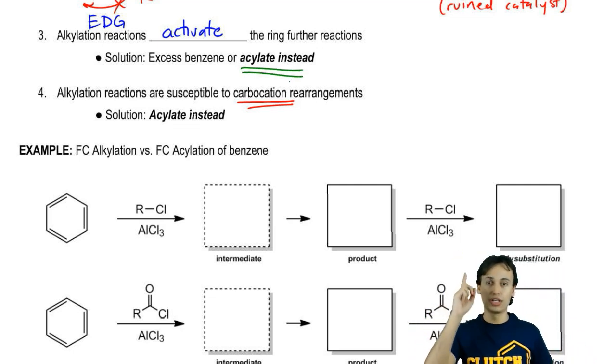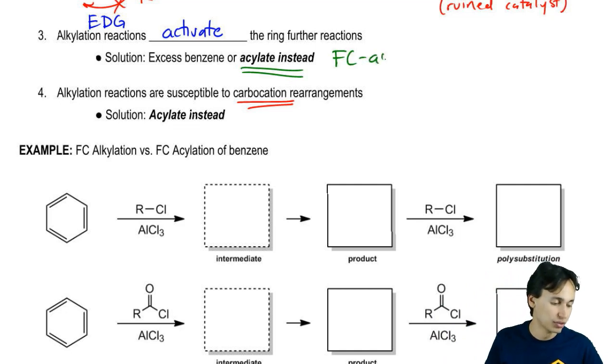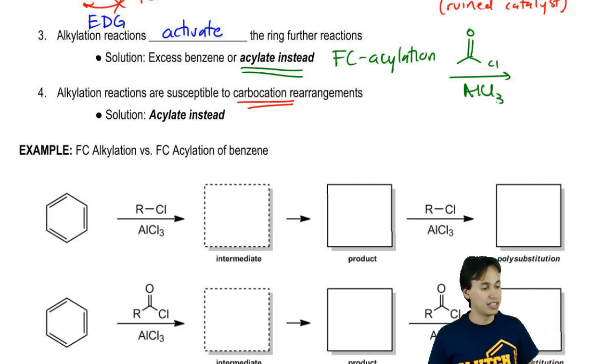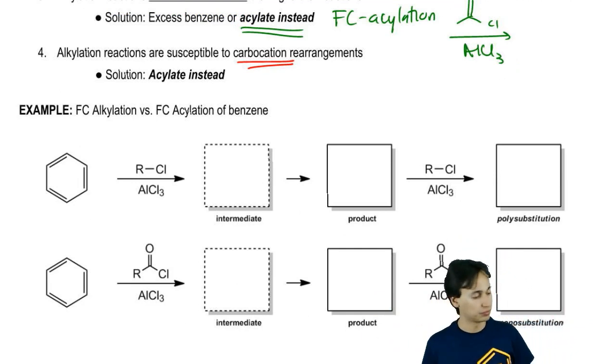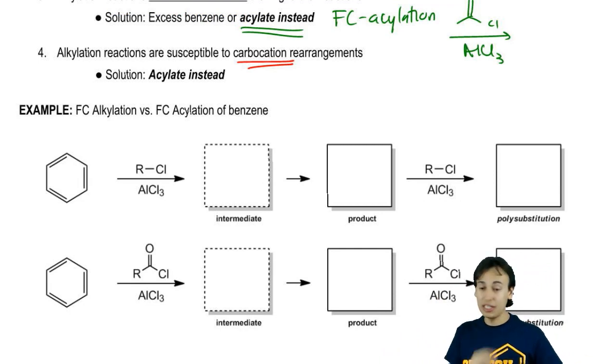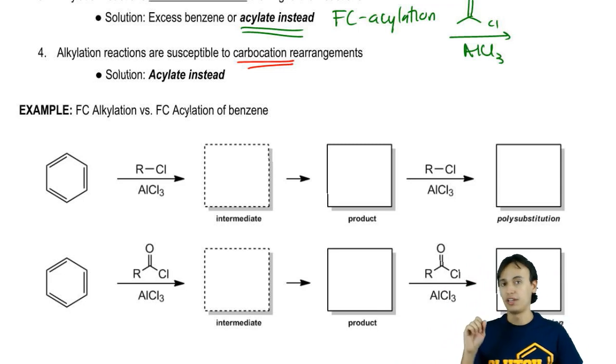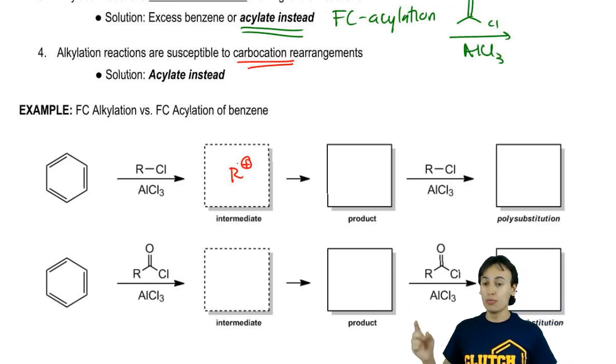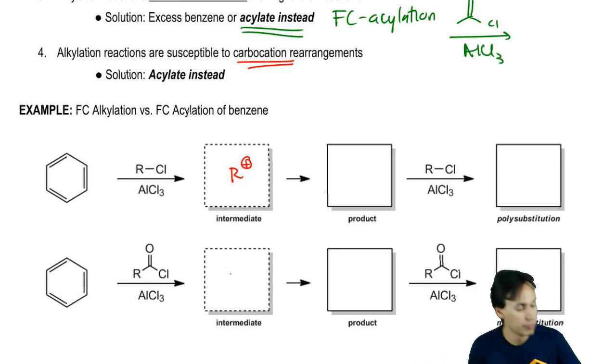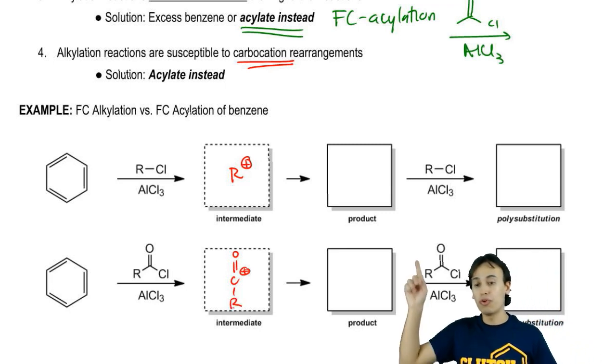What I mean by acylate is Friedel-Crafts acylation - using an acid chloride and a Lewis acid catalyst. How does that work? Let's look at these two examples of alkylation versus acylation. Notice that the intermediate of my alkylation reaction is going to be a carbocation, R+. The intermediate of my acylation is going to be what we call the acylium ion: C double bond O plus R. First of all, are both of these going to rearrange?